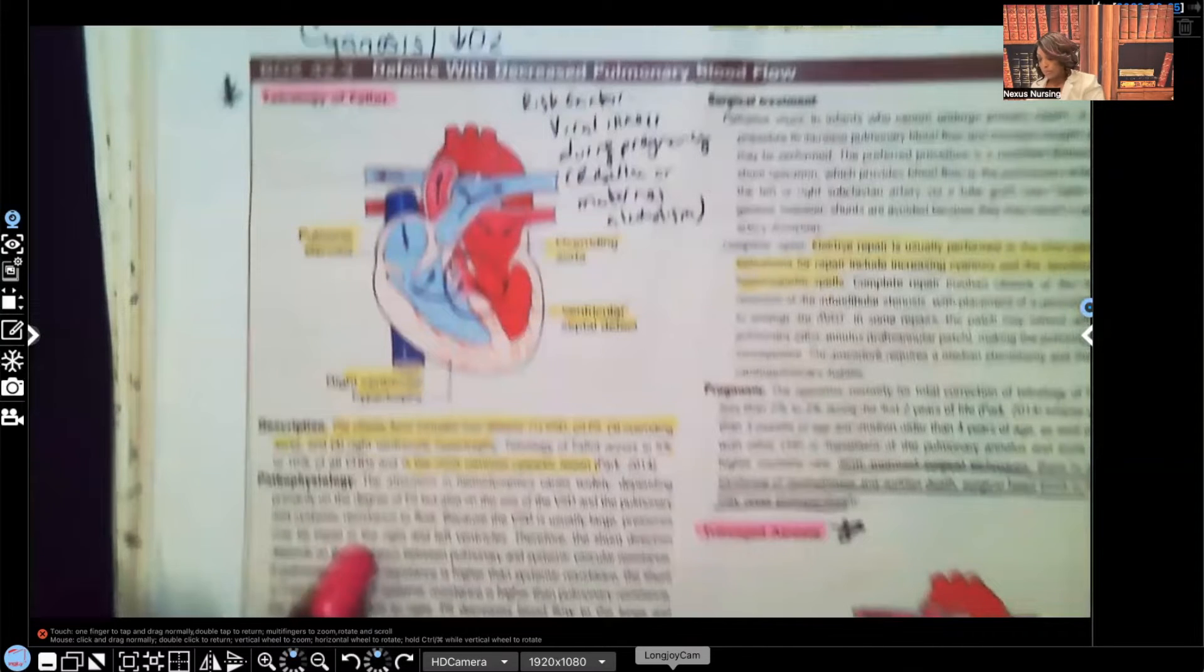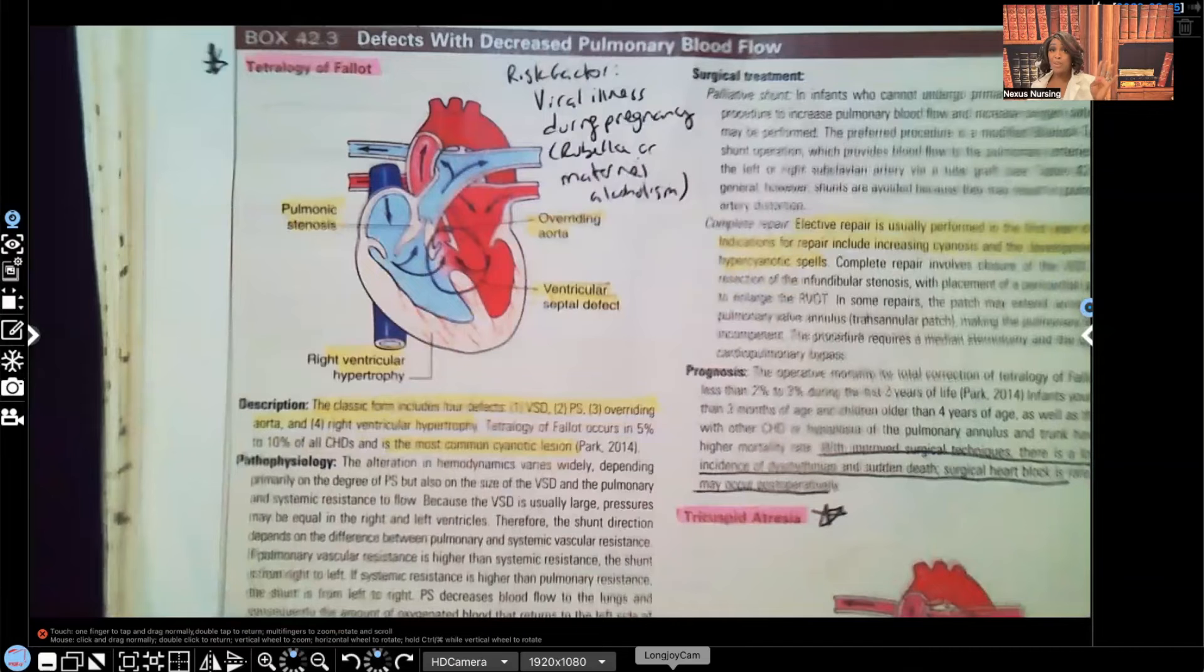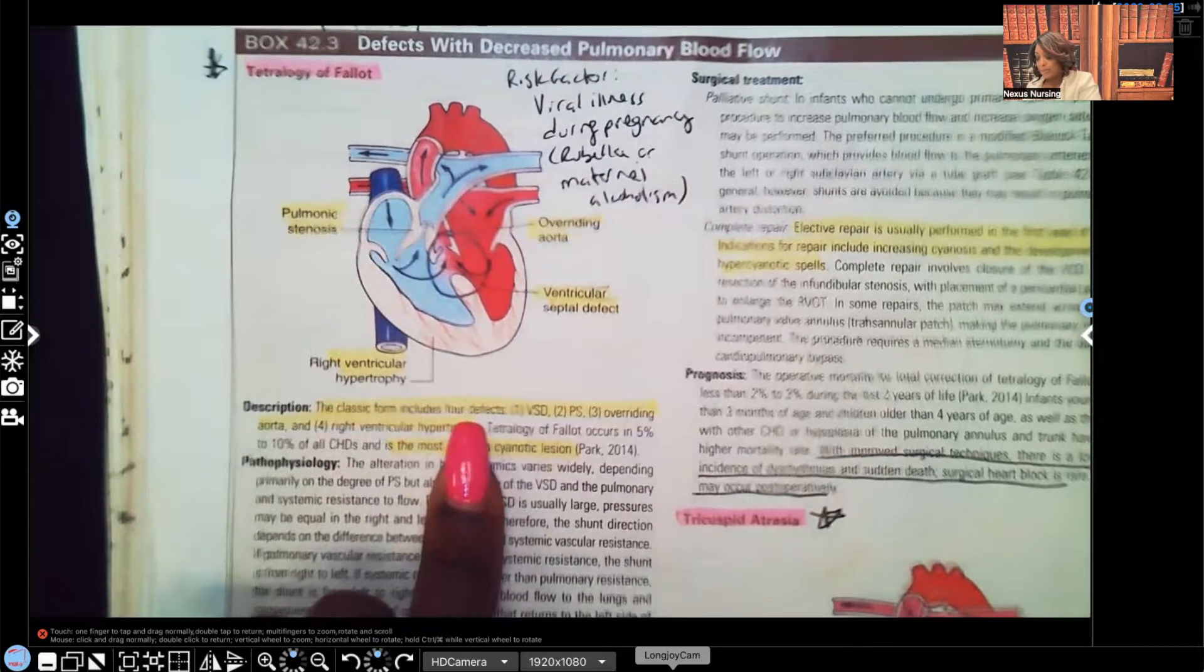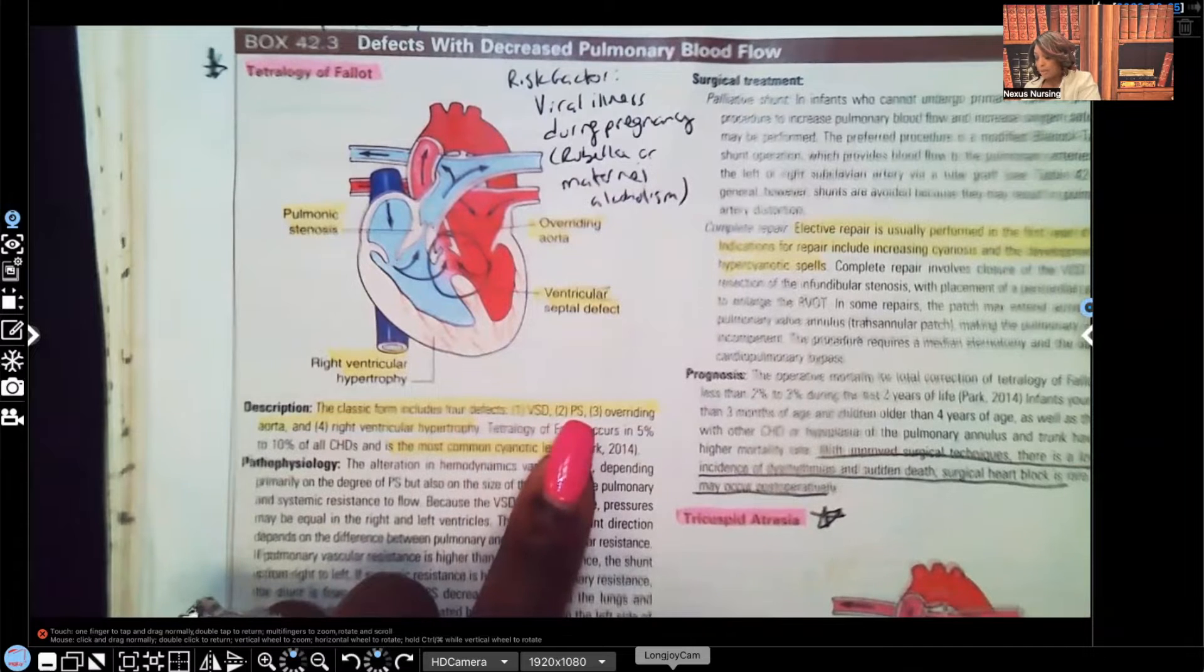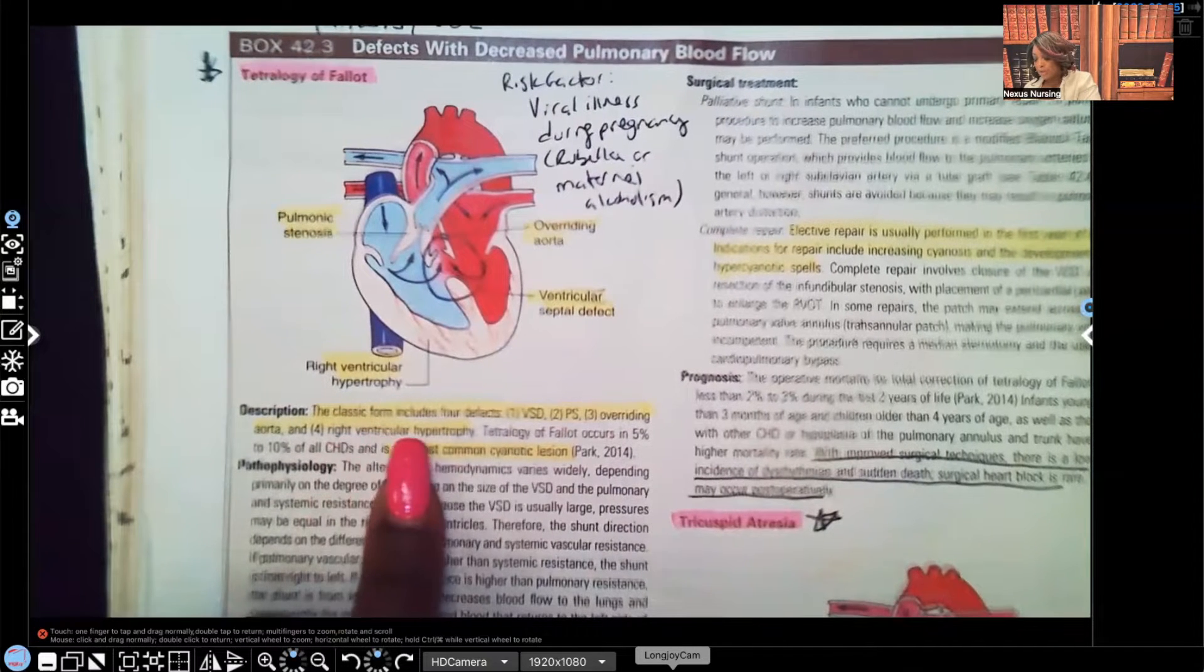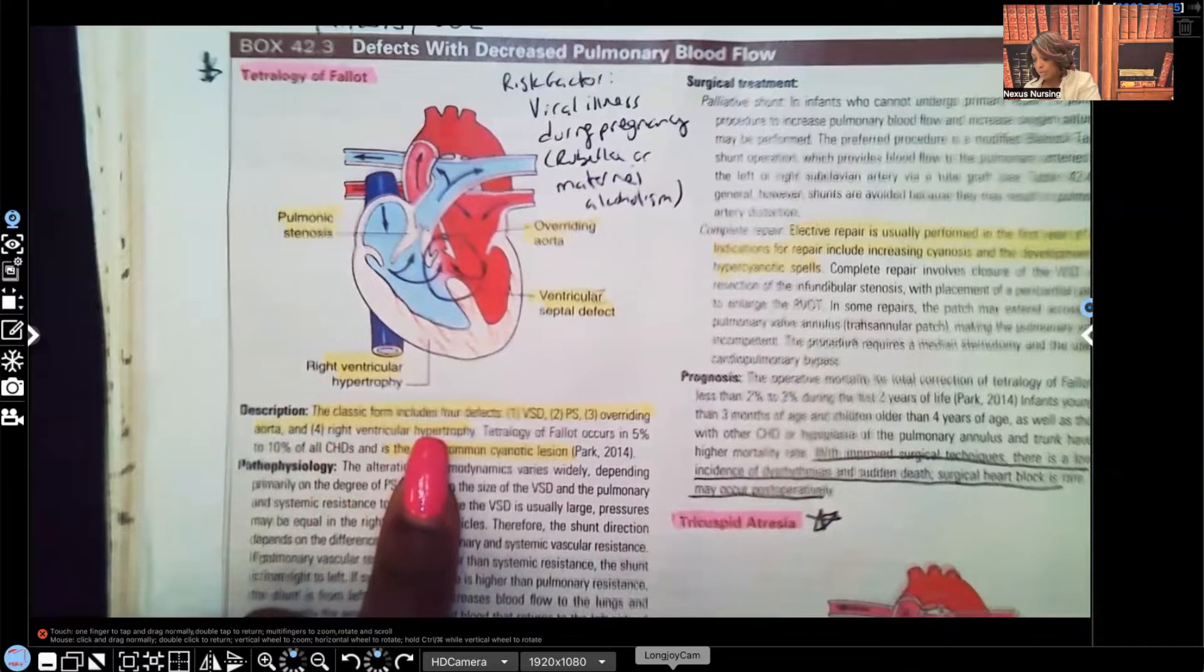So the description, because there's four different issues going on here, the classic form includes four defects: ventricular septal defects, pulmonary stenosis, overriding aorta, and right ventricular pulmonary hypertrophy.